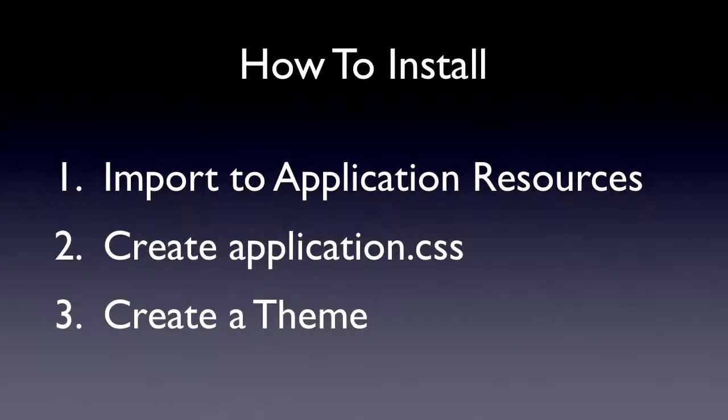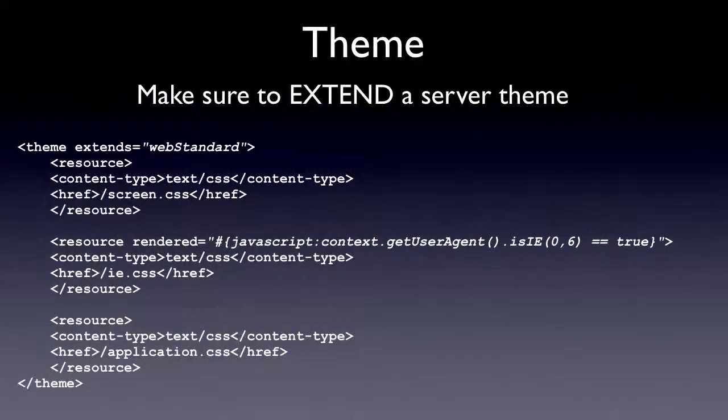How do you install it? You're going to import your screen.css into your application resources. You'll probably want to create your own CSS file for custom code, called application.css, and then you create a theme so you can use it on every page. The most important part of a theme is to extend a server theme — here at the top I'm extending WebStandard. You might also want to extend OneUI if you want some of those features, and that makes the Dojo stuff work.